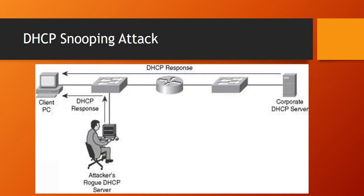As you can see in this diagram, the attacker carries out this type of attack with a fake DHCP server. The fake DHCP server is connected to the access switch — the same switch all clients are connected to — and provides clients with fake DHCP IP addresses, effectively taking over the network.